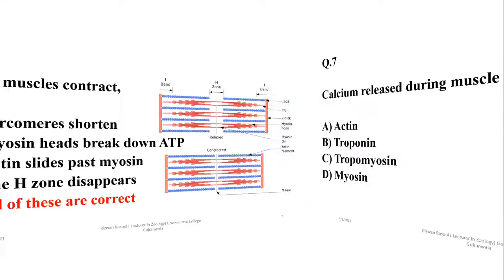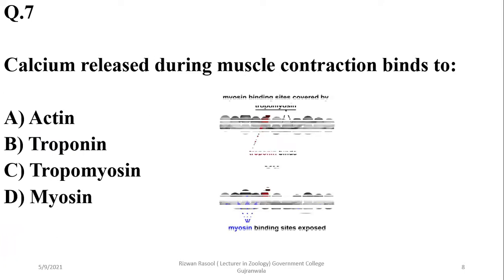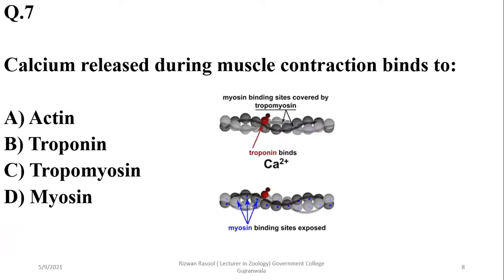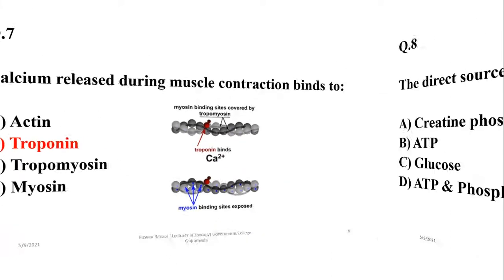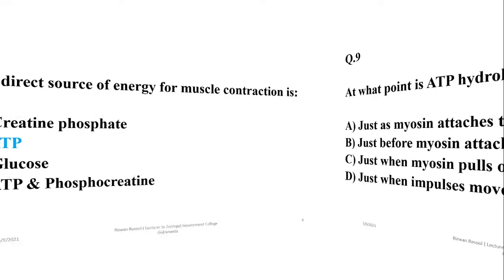Calcium released during muscle contraction binds to troponin, which helps in the displacement of tropomyosin. The direct source of energy for muscle contraction is ATP, which is obtained from different substances or molecules.